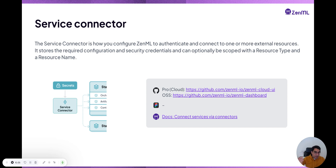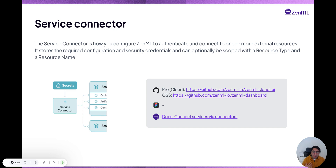You need to put the configuration of your AWS credentials inside that stack component so that ZML can launch jobs, read logs, and do many things — whether the ZML server needs to talk to your AWS account, or if the client connecting to the ZML server needs to talk to your AWS account. To manage all these credentials, ZML has the service connector concept.